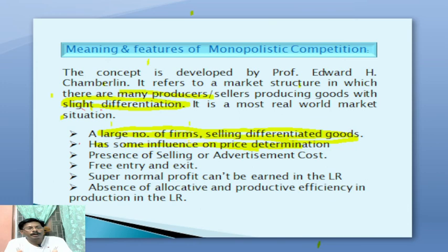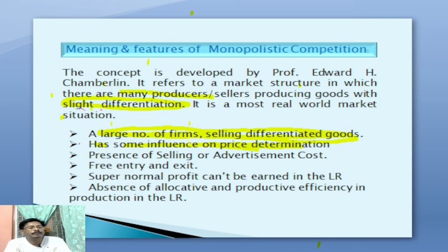These are the important features, and the last feature has been included as per the new CBCS syllabus under Assam University. These are the basic features of the monopolistic competitive market. In the next video, I will upload how the profit-maximizing level of output and price are determined in both the short and long run in a monopolistic competition market, and what is the productively efficient and allocatively efficient level of output in the long run.